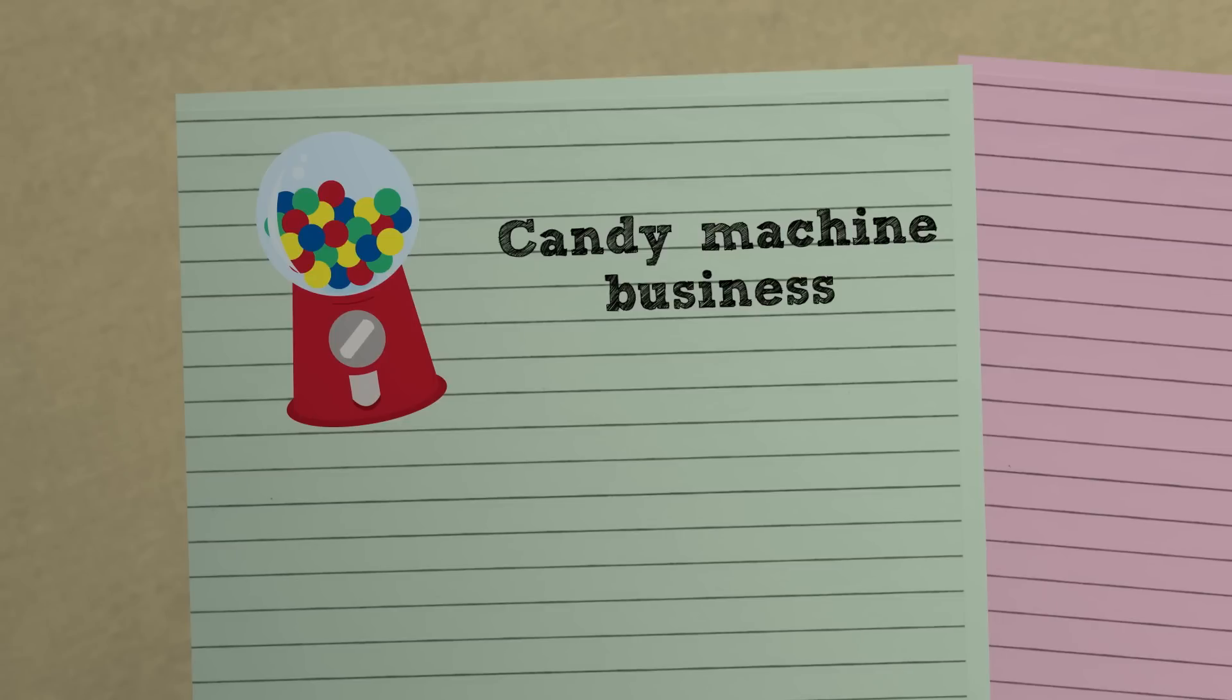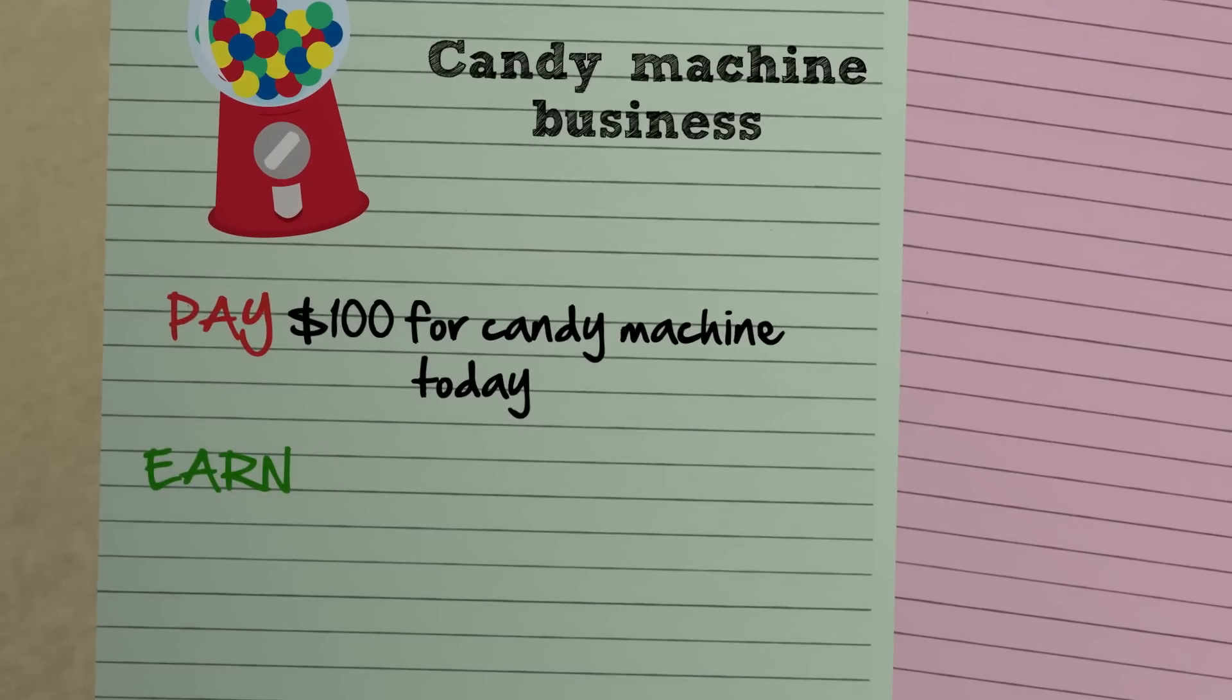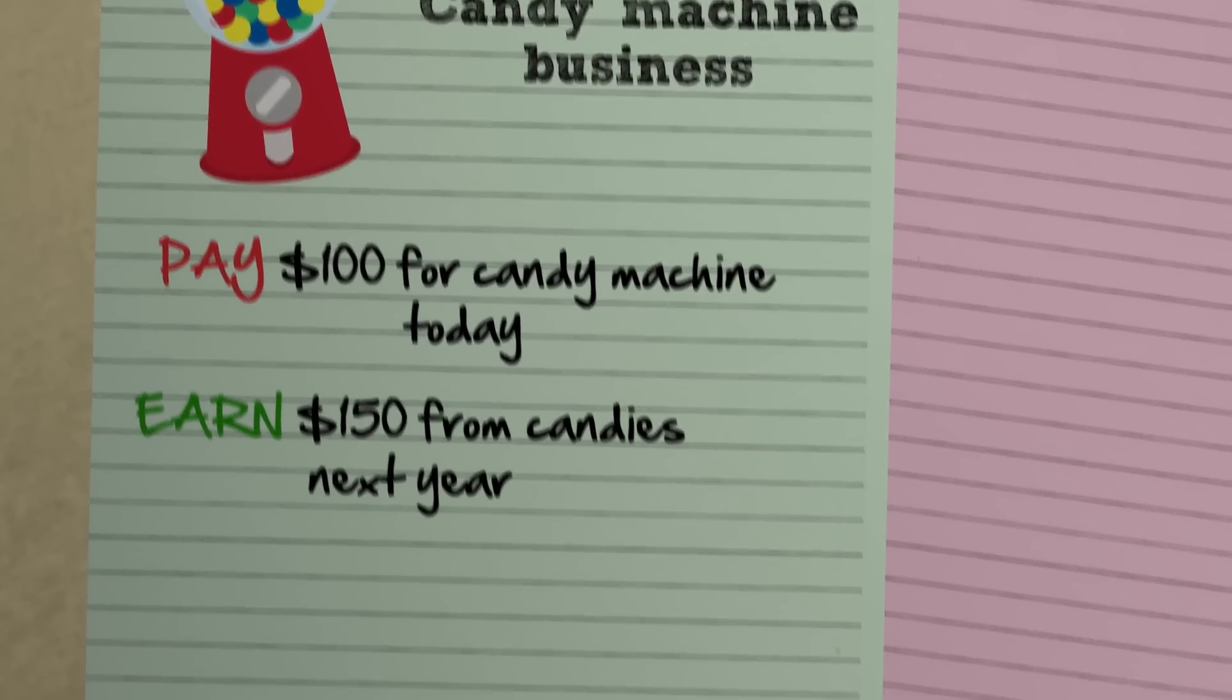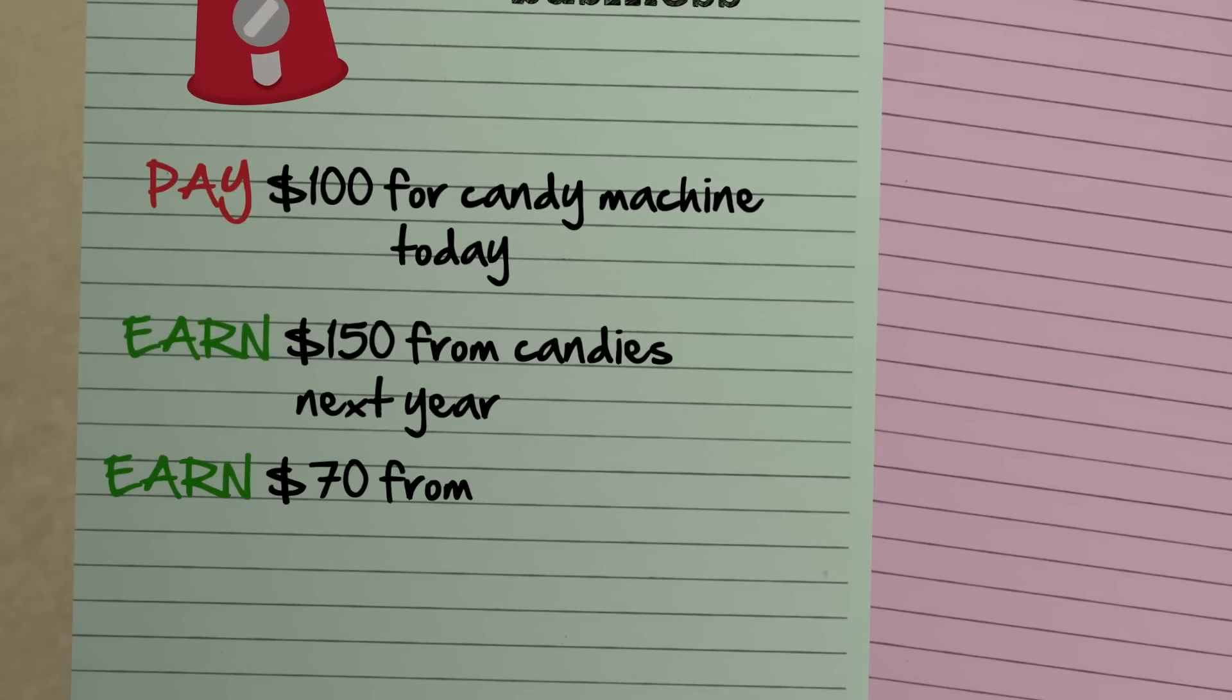As an example, let's look at a candy machine business. Let's say you pay $100 for a candy machine today. And you earn $150 from candies next year. And then you earn back $70 from selling the old machine after two years.